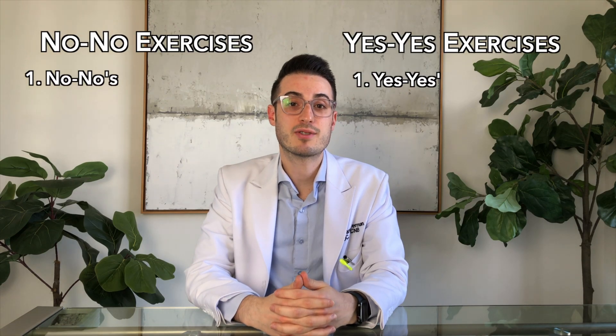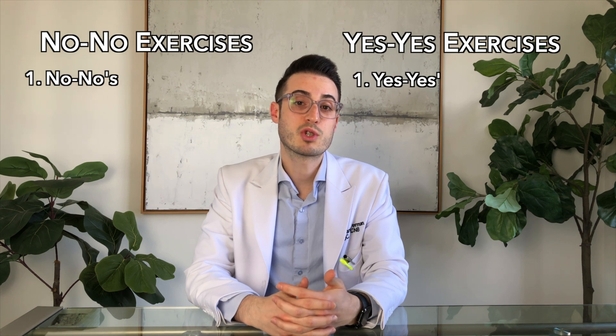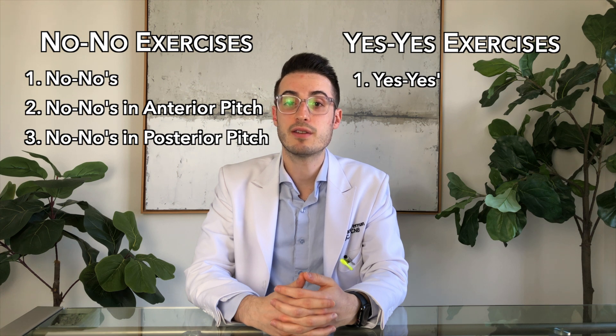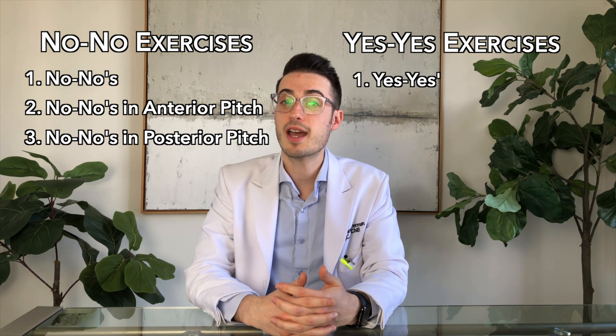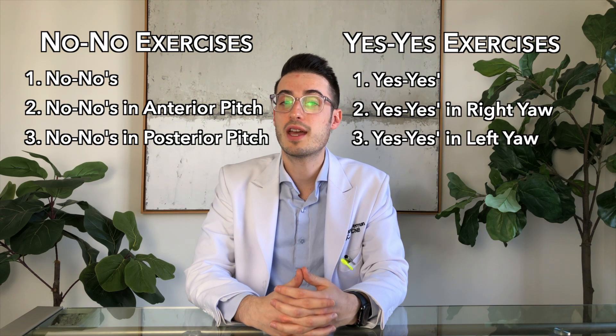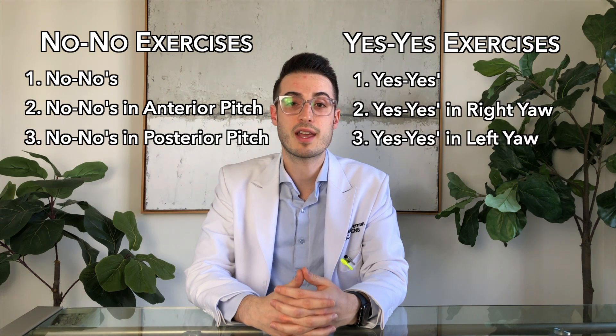There are two variations of each no-no and yes-yes exercise. No-no's can also be performed in either anterior or posterior pitch with the head tilted slightly forwards or backwards, and yes-yes's can be performed in either right or left yaw with the head turned slightly to the right or slightly to the left.